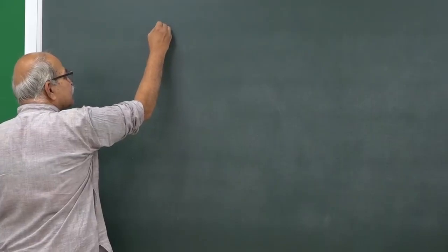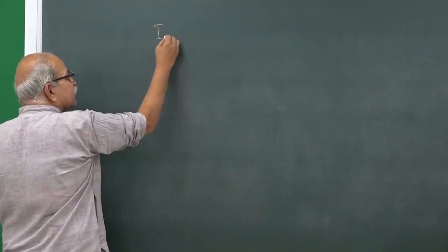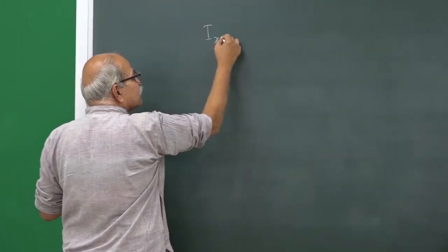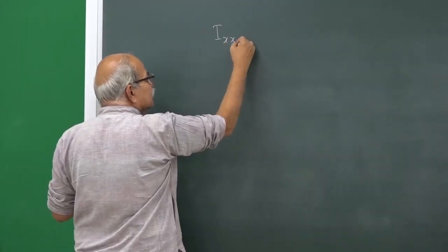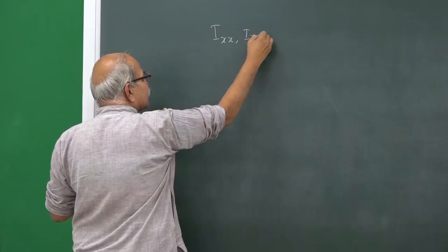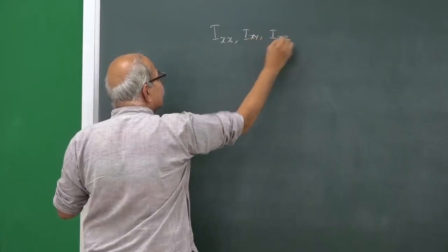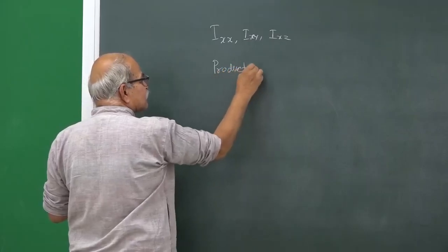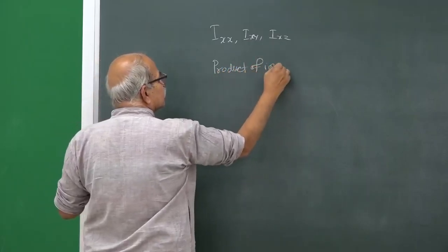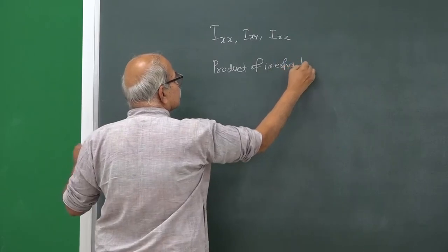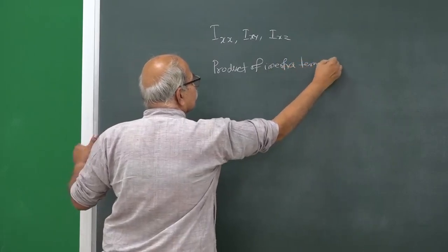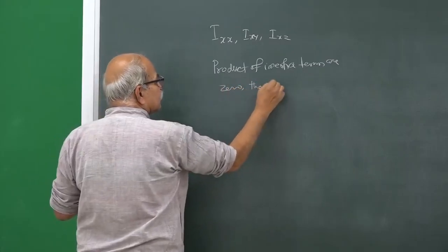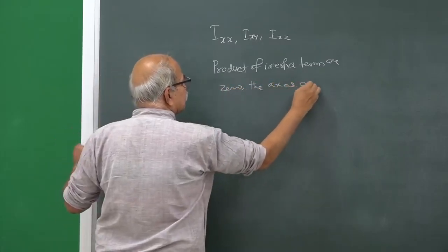If you have x, y, z axes, then you have product of inertia terms and principal moment of inertia terms: I_xx, I_xy, I_xz, and so on. If all these product of inertia terms are zero, the axes are principal axes.